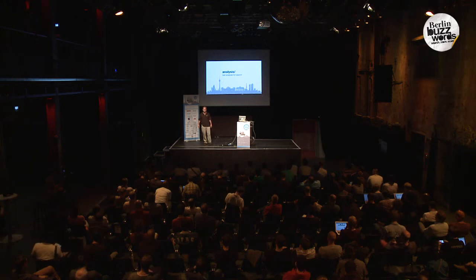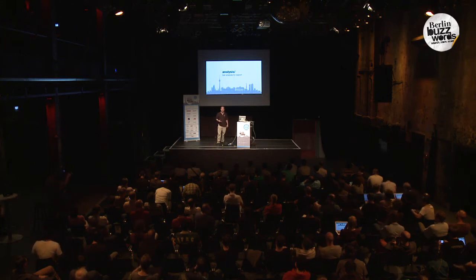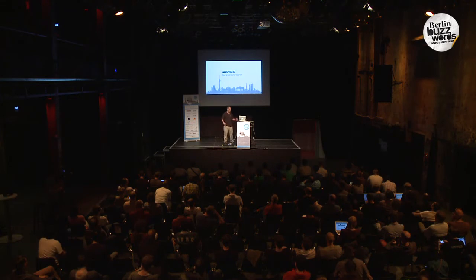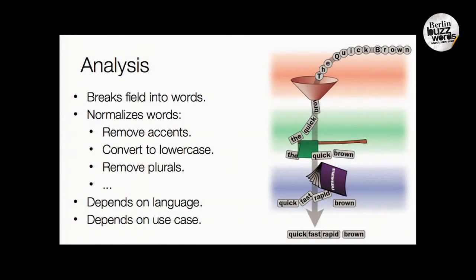The most important part for customizing this process is called the analysis chain. This defines the rules for what goes into the index — when we take a document, how do we determine which words are important, which aren't, how should they be listed? This is the most important thing to understand about Lucene if you want to improve your search results. At a basic level, analysis means taking a page and getting words out of it — words are good features for search. The first step is a tokenizer, which splits text into words.